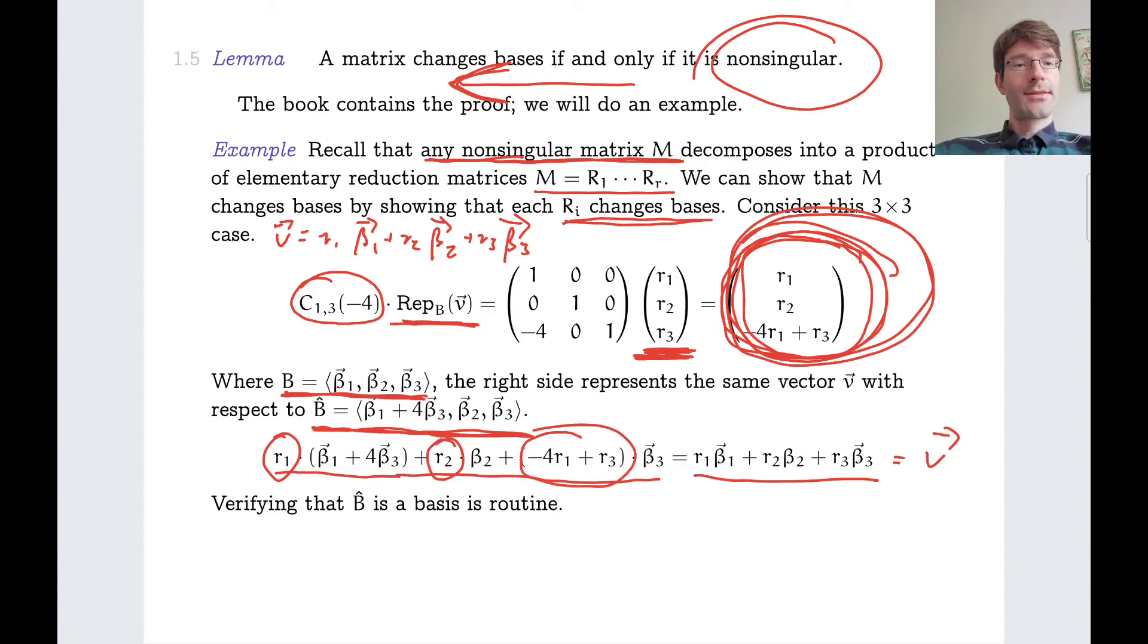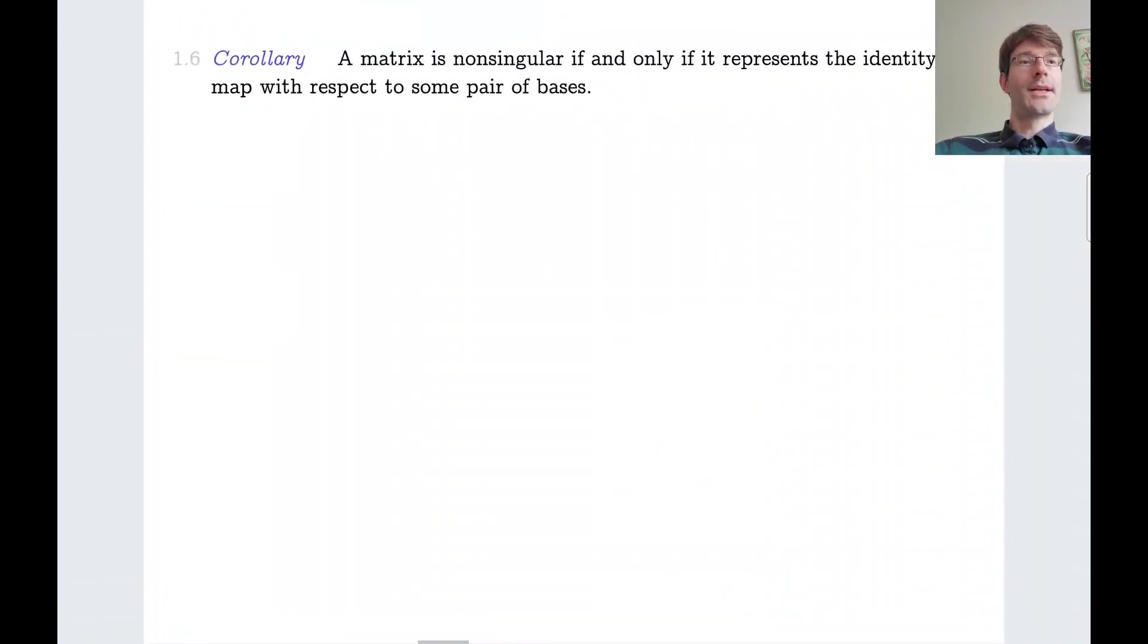Well, actually, is B hat really a basis for the same vector space? Yes, you have to check that B and B hat span the same vector space. That's routine by now, I think. And similarly, verifying that the vectors in B hat are linearly independent, assuming that these vectors are linearly independent. That's also routine by now.